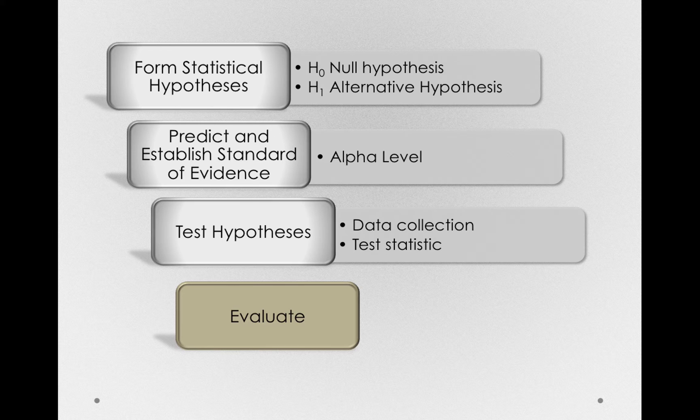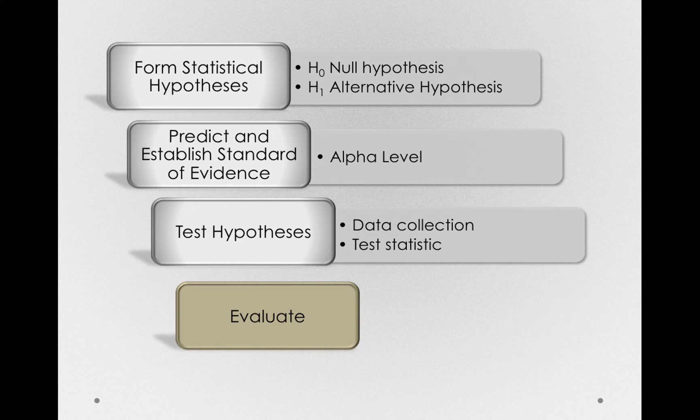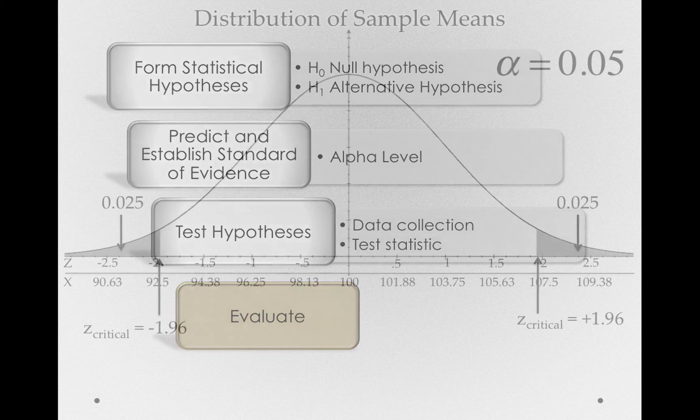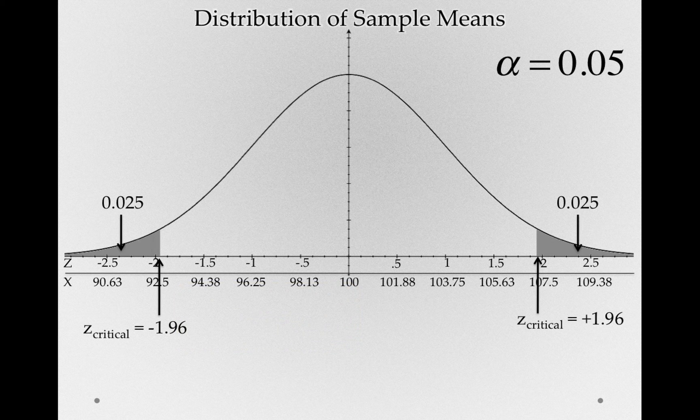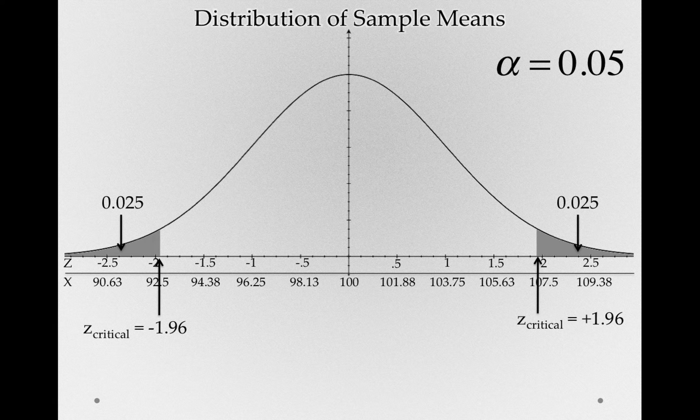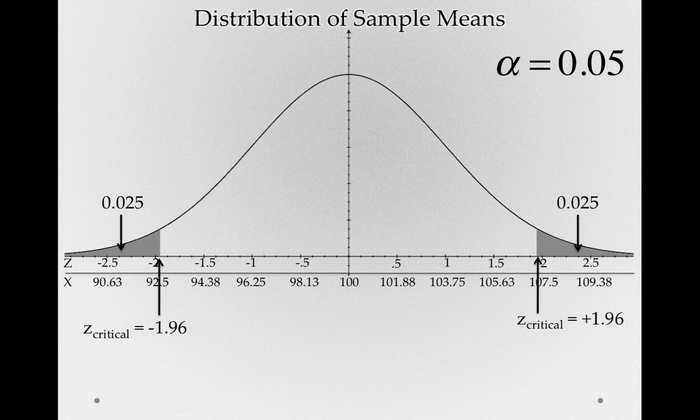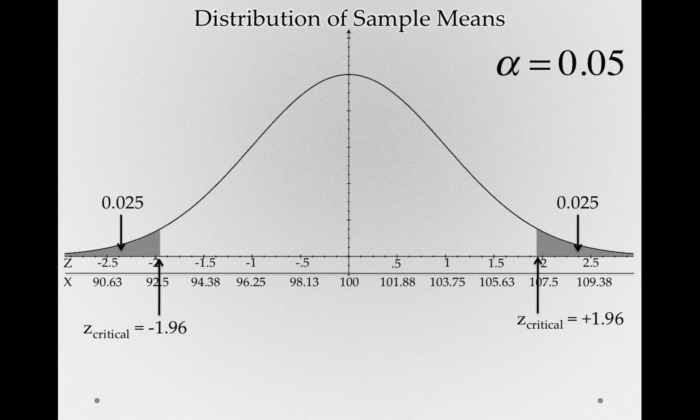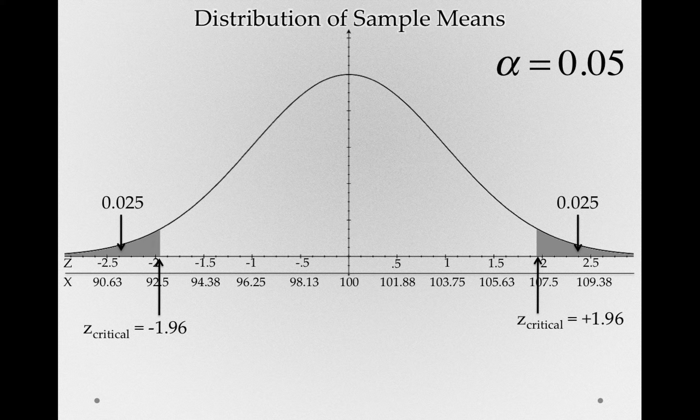So in this stage, it's just a question of, do we believe still that sampling error alone is the reason for the difference we see? And to do this, all we're trying to do is place our sample in this distribution of sample means. Did we get a sample that exceeded our standard of evidence? And by that I mean a sample that landed us in the critical region.